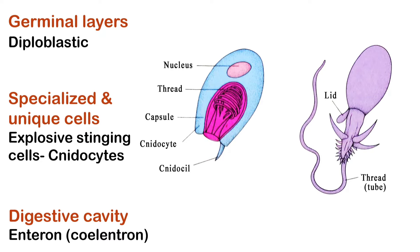These are explosive stinging cells used to capture prey, and they are present in the tentacles surrounding the mouth. The digestive cavity is of sac type, meaning the mouth is the only opening into the digestive cavity, and such a cavity is known as an enteron. It is also known as coelenteron, and from here the name coelenterata is derived.